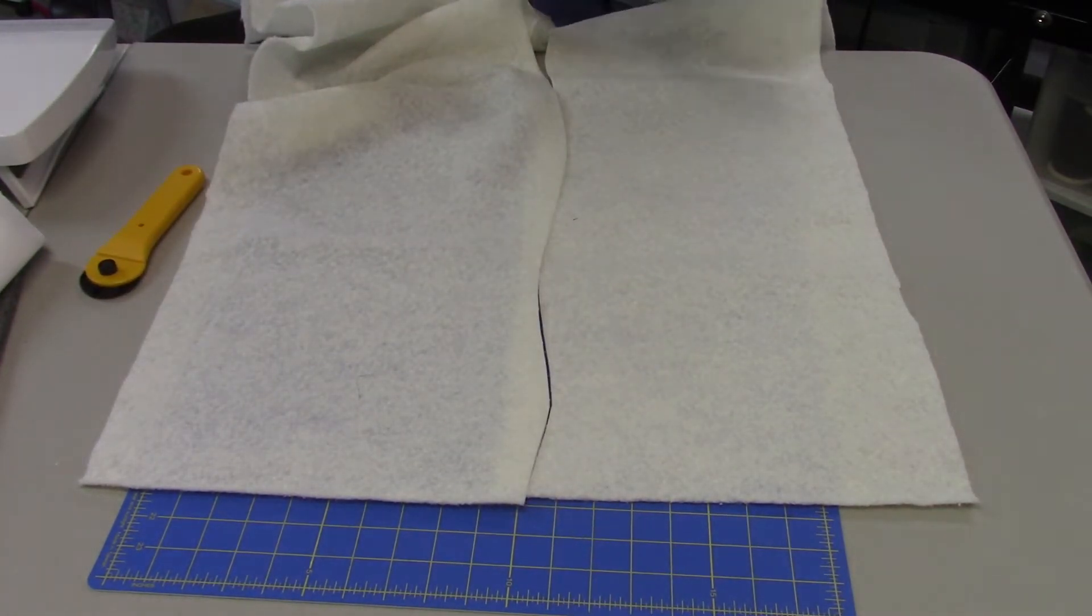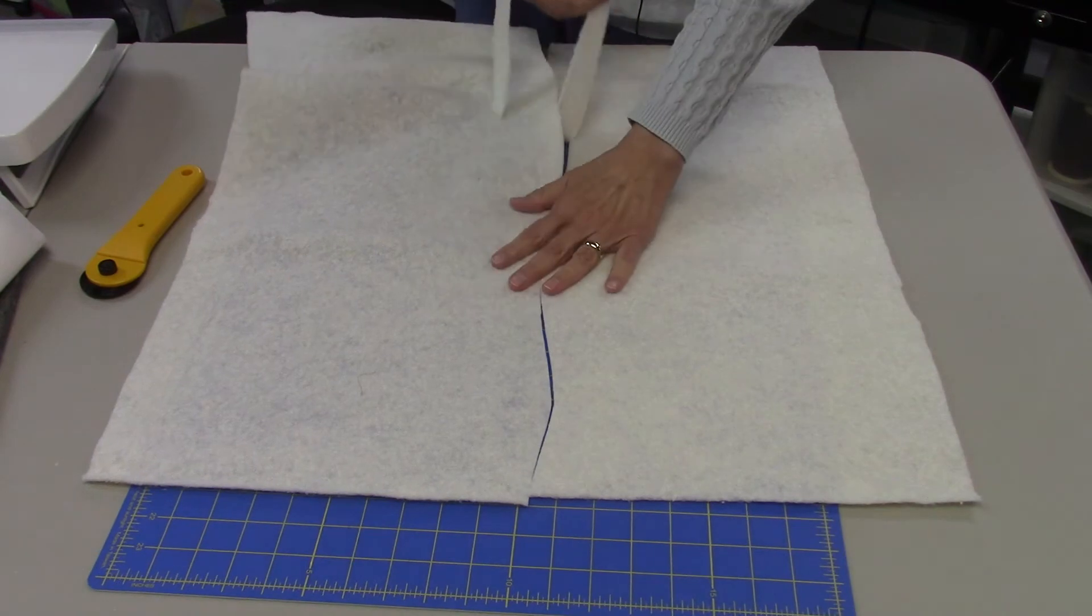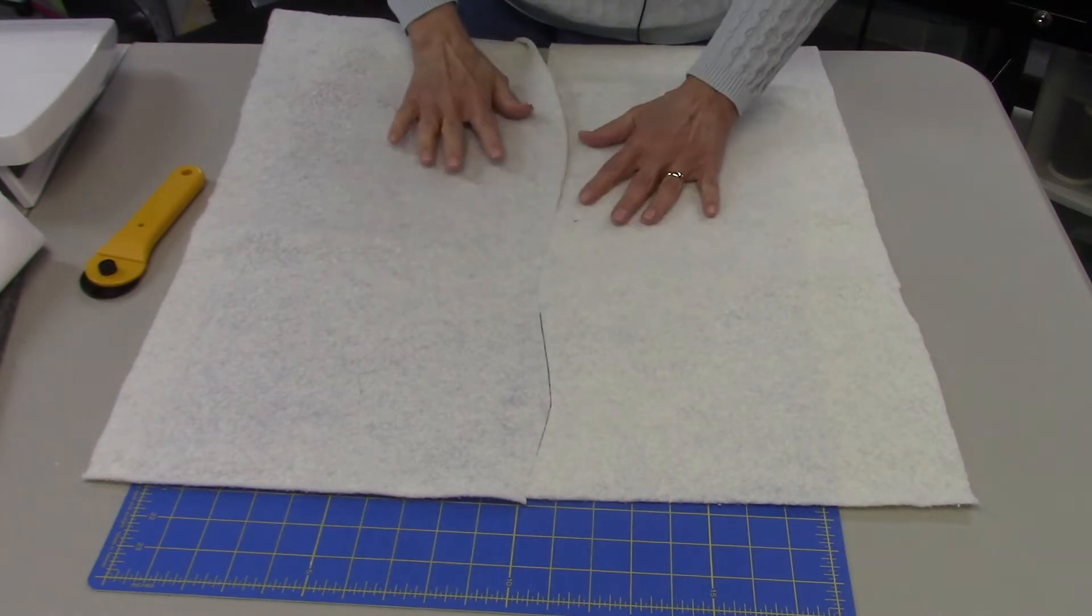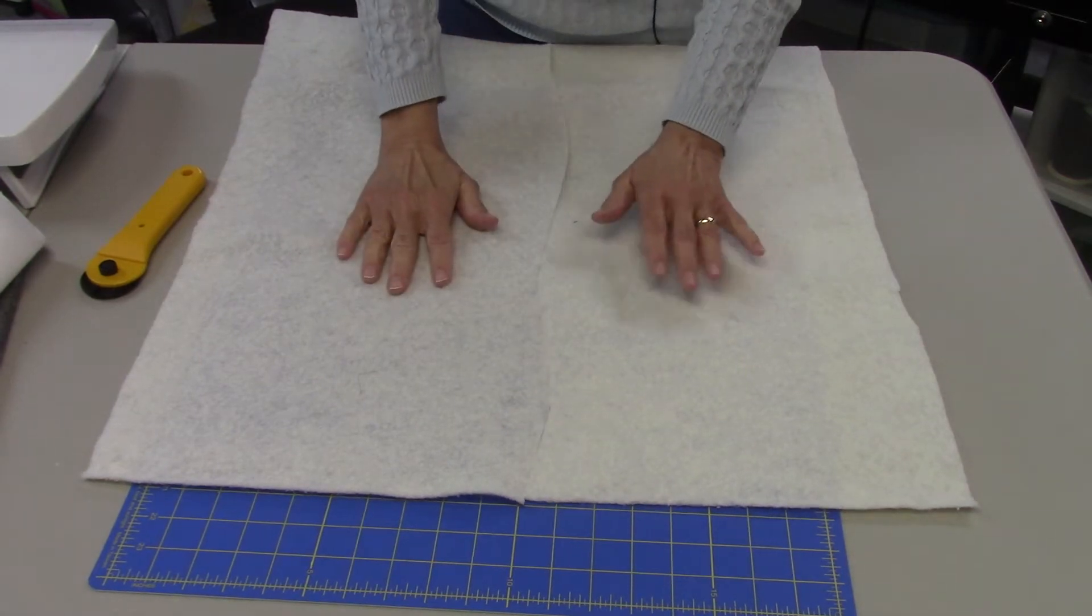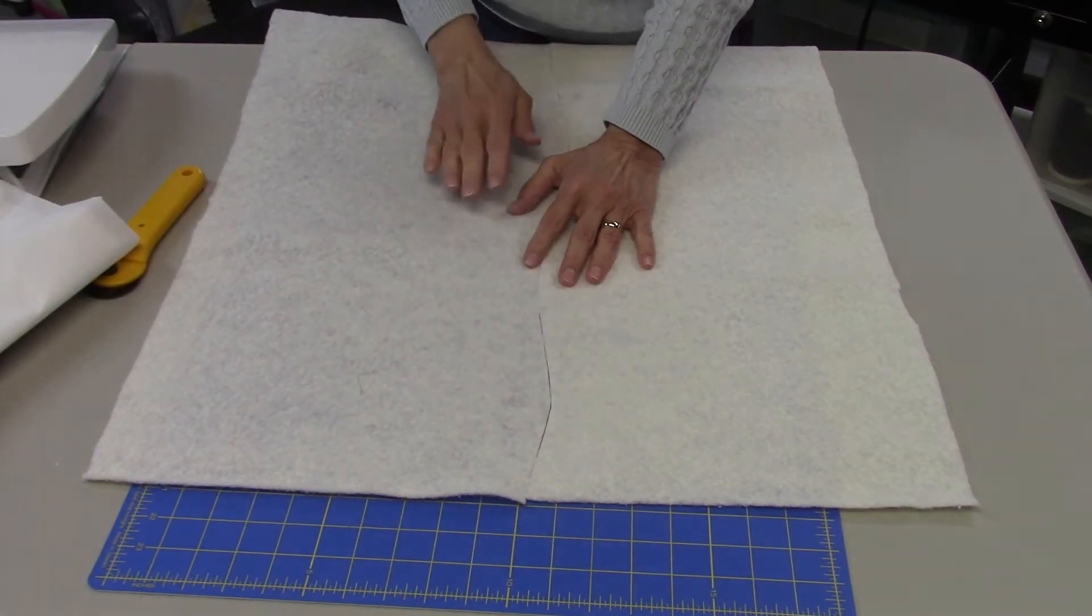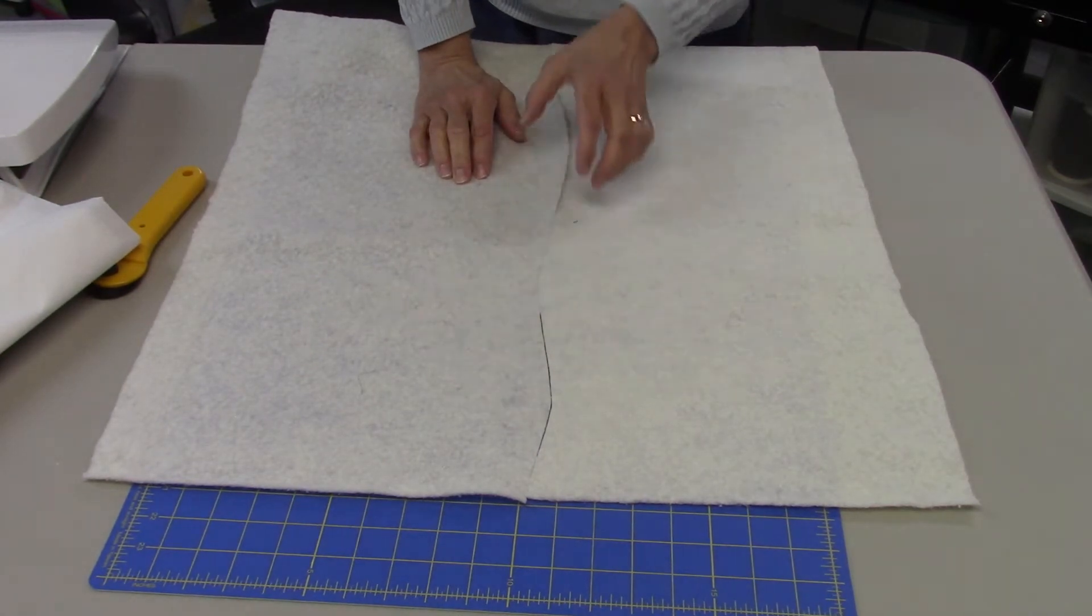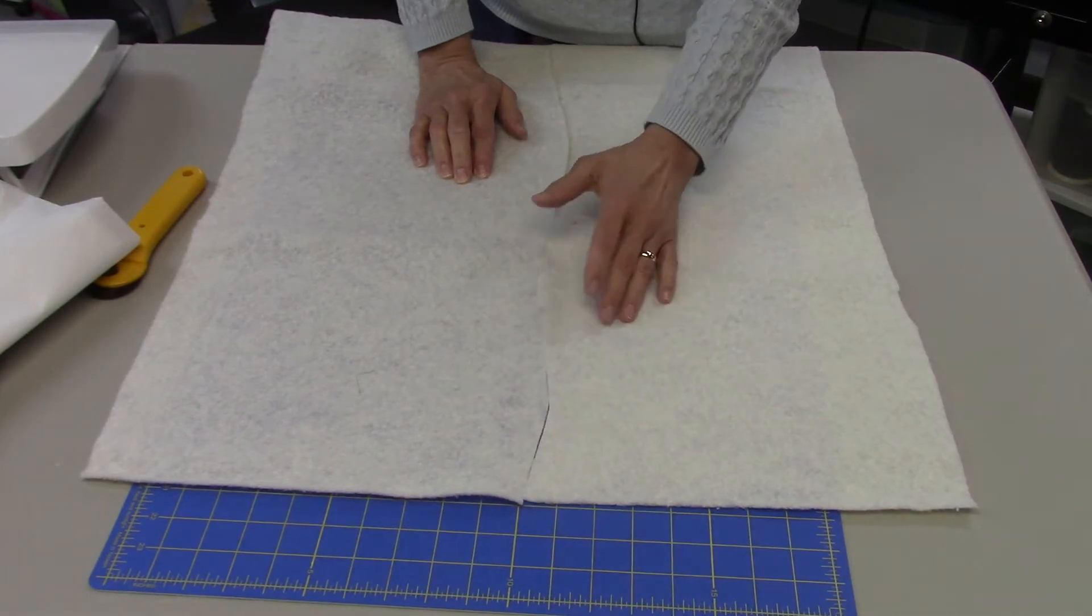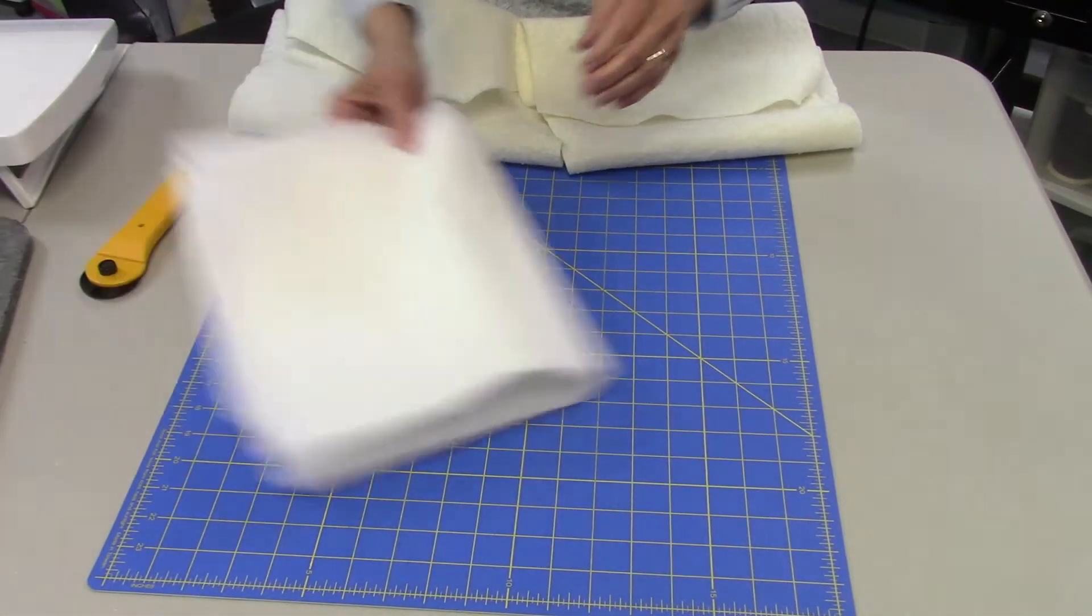If you want to, you can use your tape or interfacing and press that. Lay the strip on there - you'll need about a two-inch wide piece and fuse that together. Or you could go to the sewing machine and do a zigzag stitch. Let me show you both ways. I'm going to cut a strip of the interfacing.